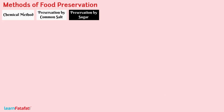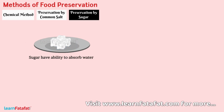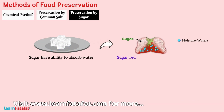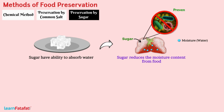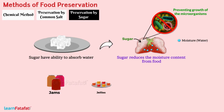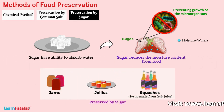Preservation by sugar. Sugar has the ability to absorb water, so it reduces the moisture content from the food, thereby preventing growth of microorganisms. Jams, jellies and squashes are preserved by sugar.